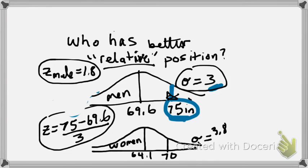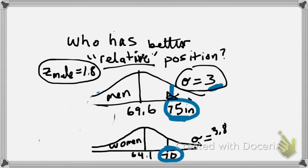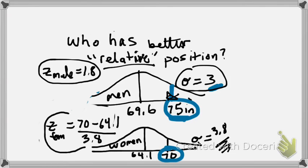Now, let's go ahead and get the z-score with regard to this female here that's 70 inches tall, but take into account that female heights have their own standard deviation and their own mean. My z-score, I'm going to call it z-fem, is going to be 70 minus 64.1 divided by the standard deviation for the females, which is 3.8. So the z-score with regard to the females is about 1.55.